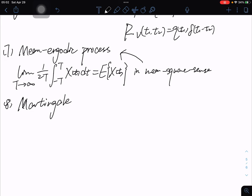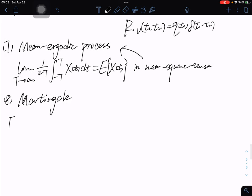And the eight is martingale process. If E[X(t)|X(s)] = X(s) when s is smaller than t, we can say that it is martingale process.